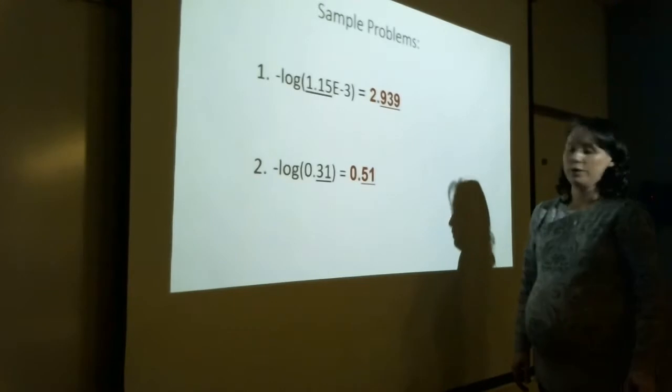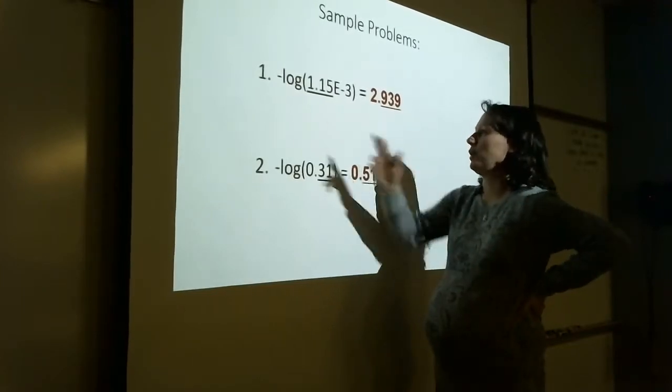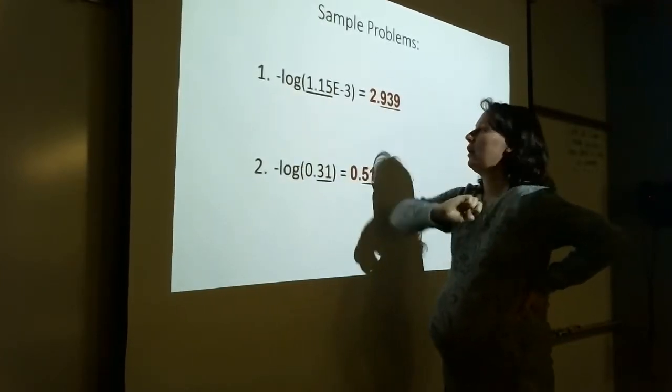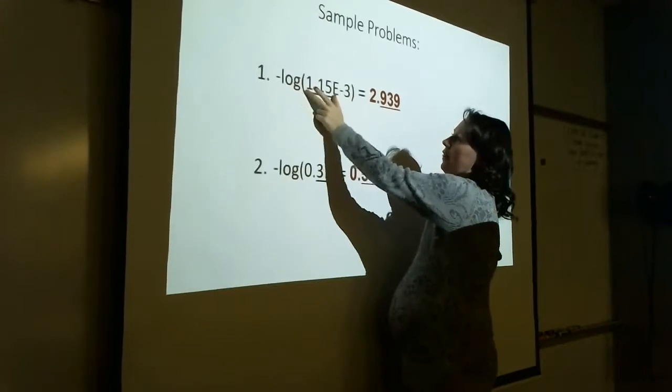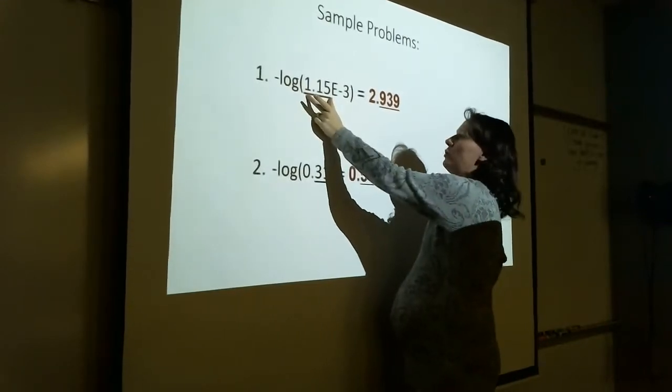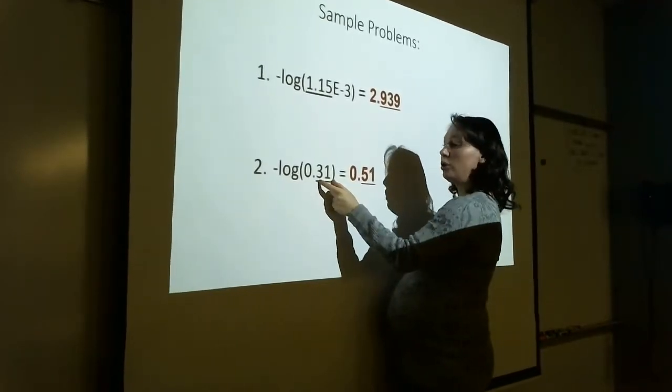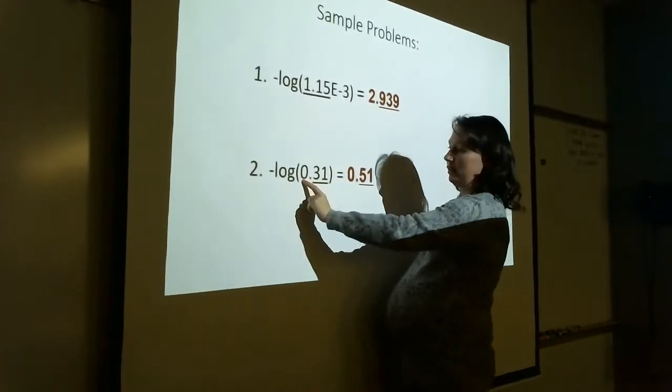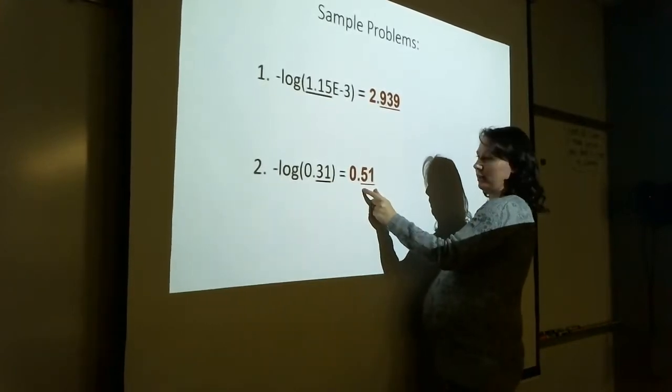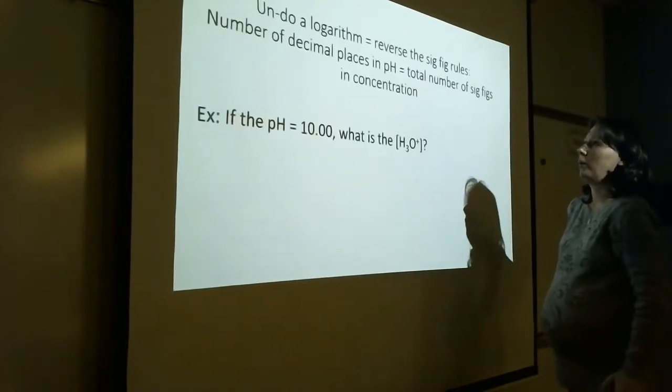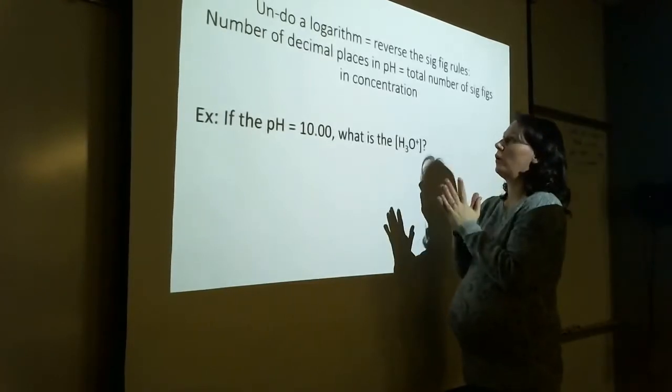Here are a couple more sample problems. If I'm taking the negative log—again, we're just pretending we're doing a pH, but even if we were just taking the logarithm—this number has three sig figs: 1.15 times 10 to the negative third. This value has three significant figures, which means I need three decimal places after I take the log. This value has two significant figures—this zero is just the placeholder, it's not a significant figure—so I need two decimal places after I take the log.